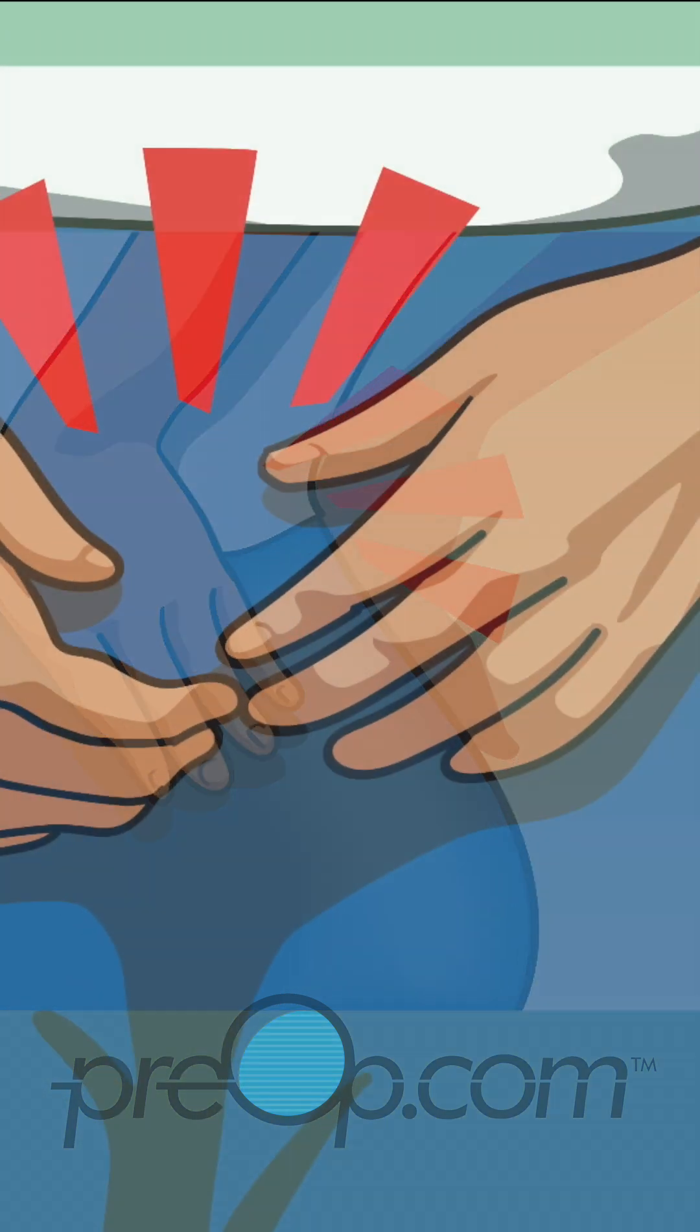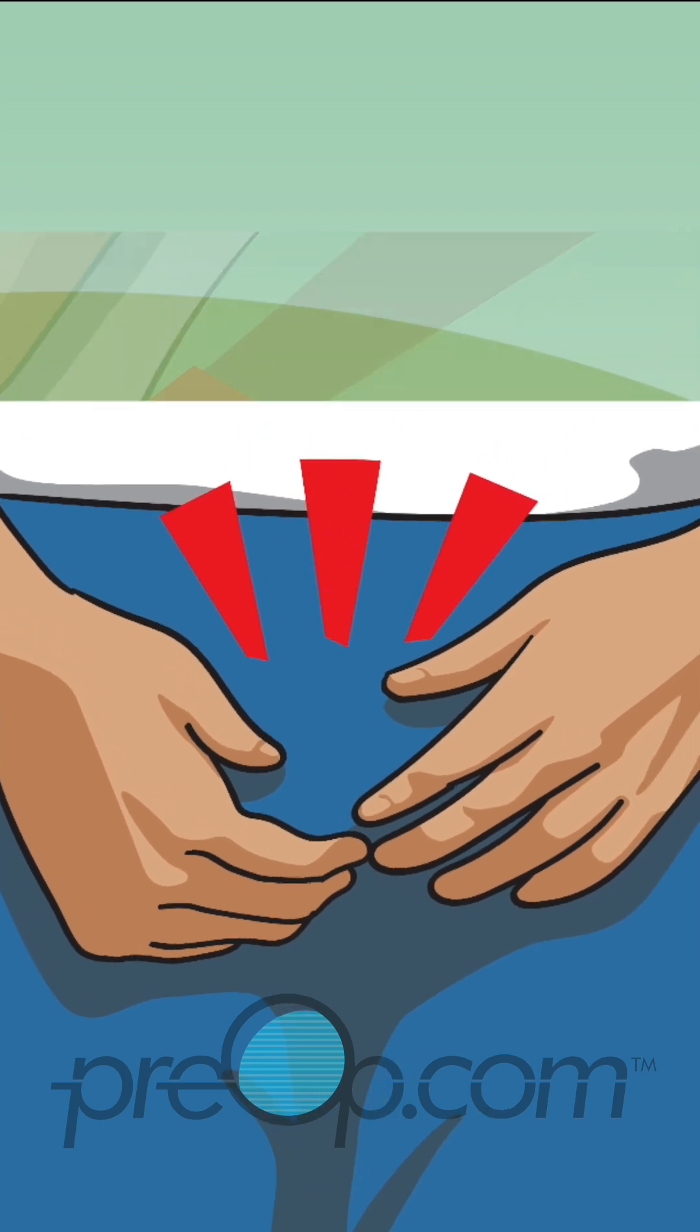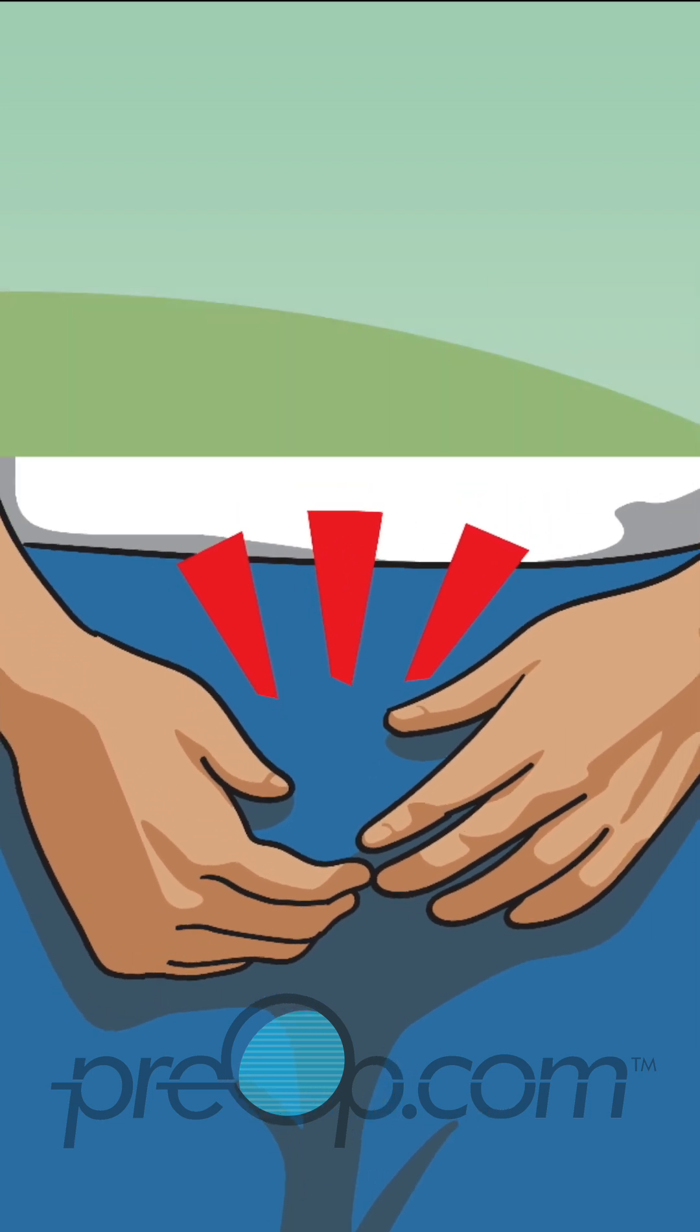This pain is mostly caused by spasms or cramping of the ureter and bladder. It can be worse when you try to urinate.